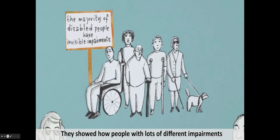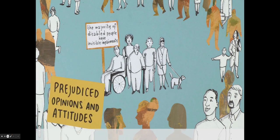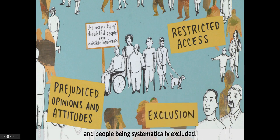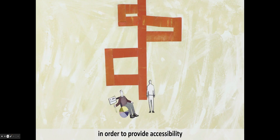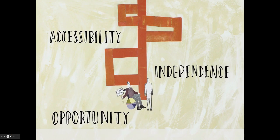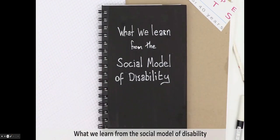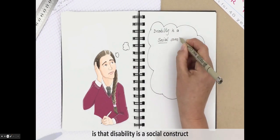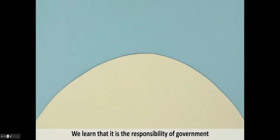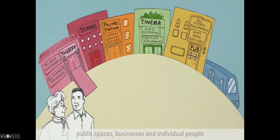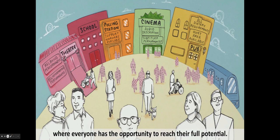They showed how people with many different impairments face many of the same problems. These disabling barriers include prejudiced opinions and attitudes, restricted access, and people being systematically excluded. The social model looks for ways that society can be planned and organised in order to provide accessibility, independence, and opportunity in a way that enables people rather than disables them. What we learn from the social model is that disability is a social construct created by social barriers — barriers which can be eliminated — and that it is the responsibility of government, public spaces, businesses, and individual people to make changes to increase access and build a more equal society where everyone has the opportunity to reach their full potential.